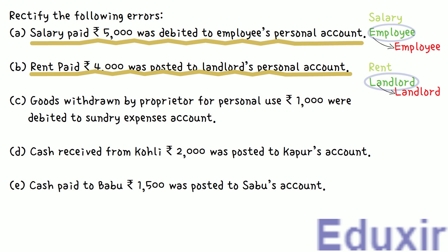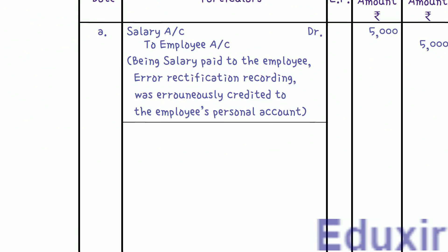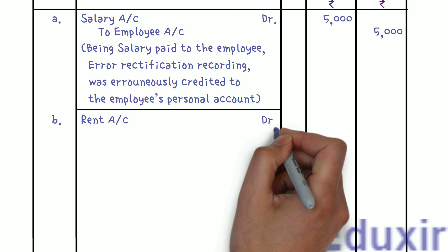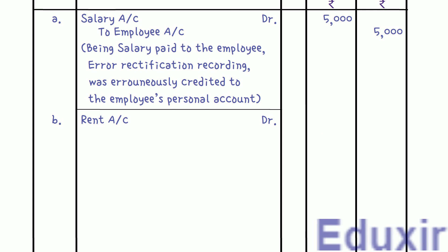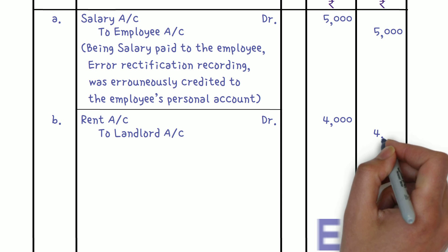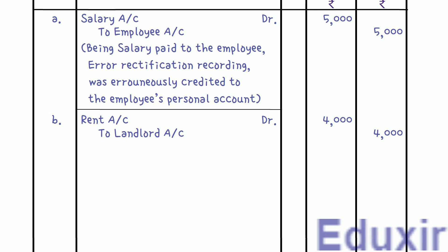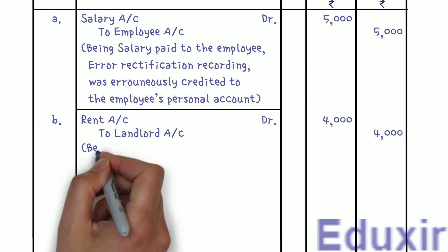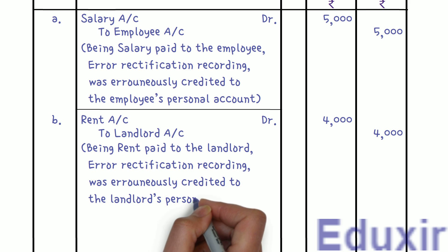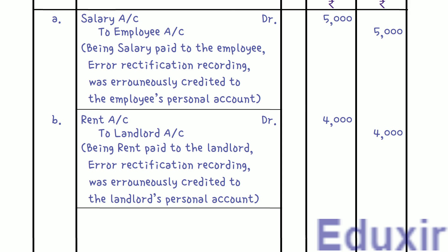With this analysis, let us record the entry. Entry: Rent Account DR Rs. 4,000; To Landlord's Account Rs. 4,000. Narration: Rent paid to the landlord — error rectification, recording was erroneously credited to the landlord's personal account. A line is drawn to mark completion of these entries.